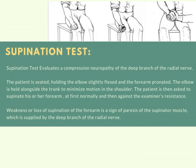For the supination test, the patient is seated holding the elbow slightly flexed and the forearm pronated. The elbow is held alongside the trunk to minimize motion in the shoulders, as shown in the picture. The patient is then asked to supinate the forearm, first normally and then against the examiner's resistance.